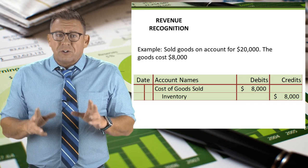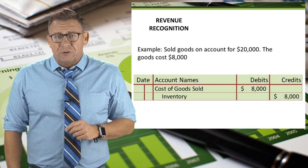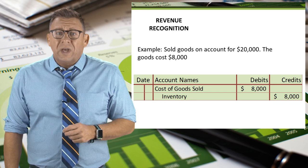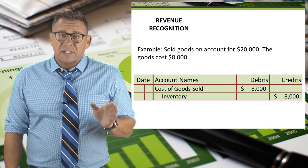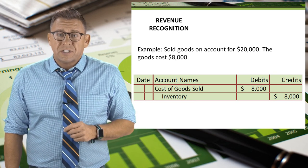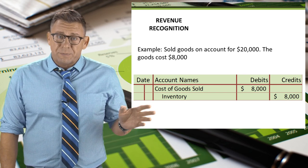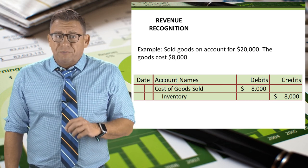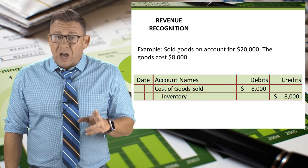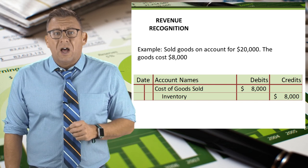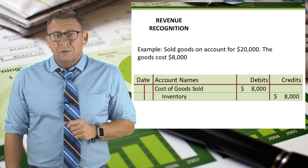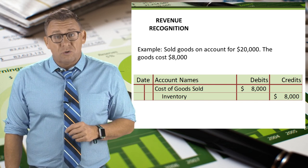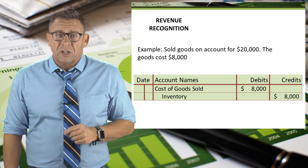But that is only the first of two journal entries we need to make when we sell goods. We also need to record the cost of the goods sold — this is an expense account — and the reduction of inventory for the cost, not the price, of the goods sold. In this example, we debit cost of goods sold and credit inventory for $8,000.